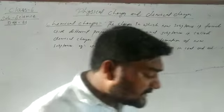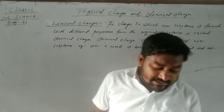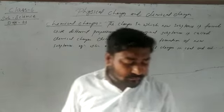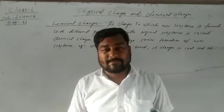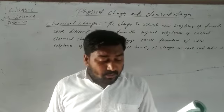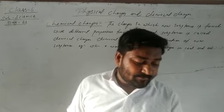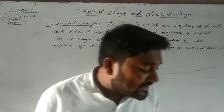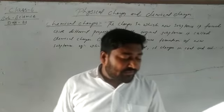All the properties of wood are changed after burning. Some examples of chemical changes are: conversion of milk to curd, rusting of iron, burning of charcoal, and digestion of food.